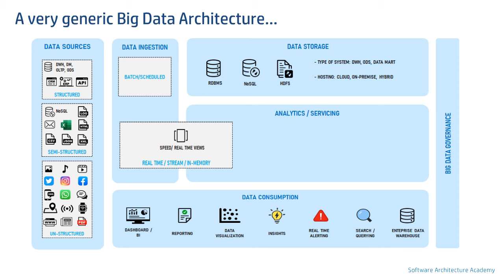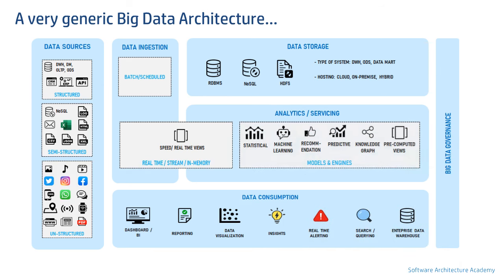Next is the analytics or serving layer — this is where models and engines run and provide outputs to be utilized by the consumption layer, typically on demand. It can have statistical and AI models, recommendation engines like Amazon product recommendations or YouTube video recommendations, and a knowledge graph which is widely used for link analysis and social media analysis.